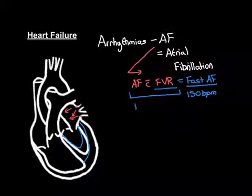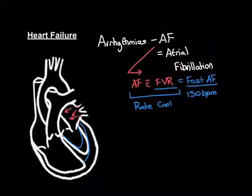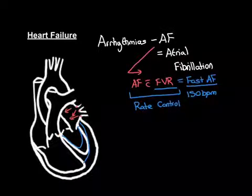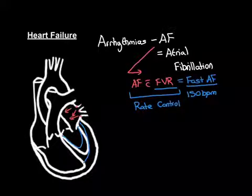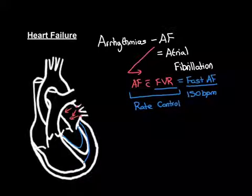This is why it is so important in people with atrial fibrillation to rate control them. There are drugs that stop the atrioventricular node from conducting too many action potentials, ensuring it only conducts at a normal rate. The first drugs we would use are beta blockers — the main example being bisoprolol. And if that doesn't work, we could add on something like digoxin, which is very good at rate controlling AF.